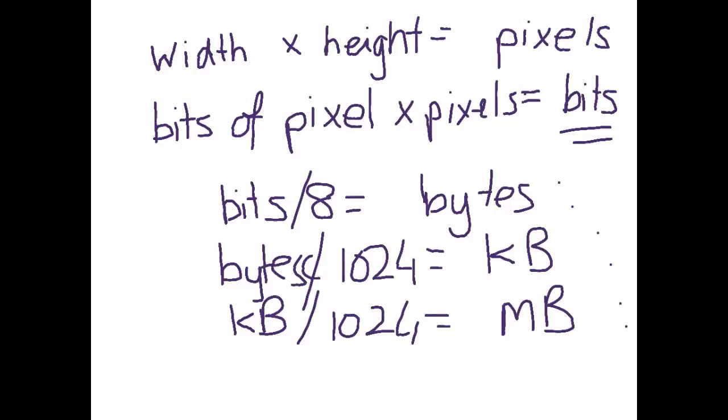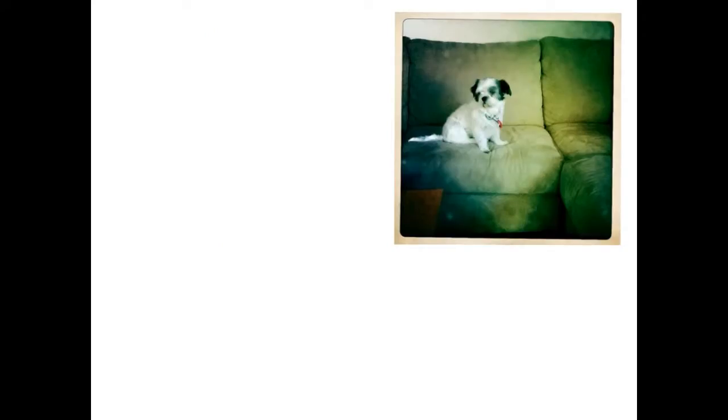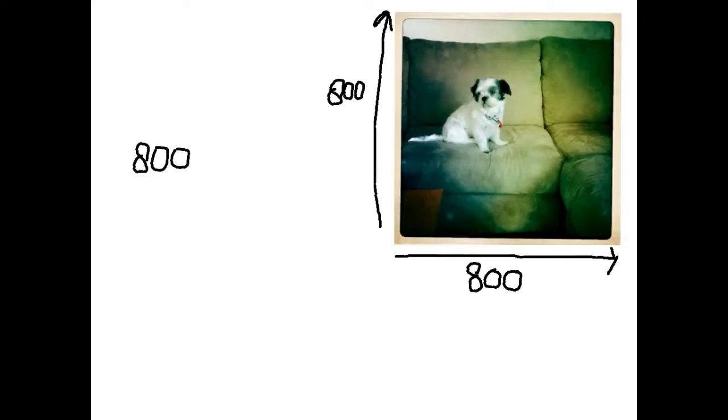So let's start off with a basic picture. I've started with a photo of my gorgeous little puppy dog. Now let's assume, these are probably not the correct numbers, but let's assume that it was 800 pixels wide and 800 pixels high. So 800 times 800 equals 640,000 pixels in the picture.